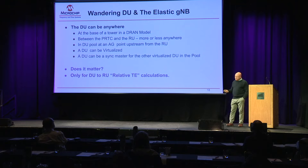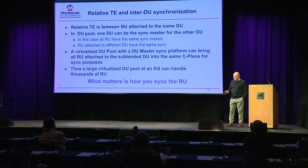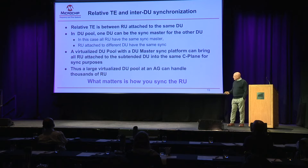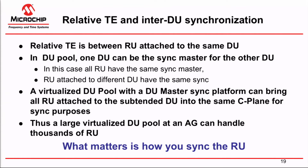It only matters for the DU-to-RU relative time error calculations. What matters is how you sync the RU. The relative time error is between the RUs attached to the same DU. In a DU pool, one RU could be the sync master for the other RUs. In this case, all the RUs have the same sync master.